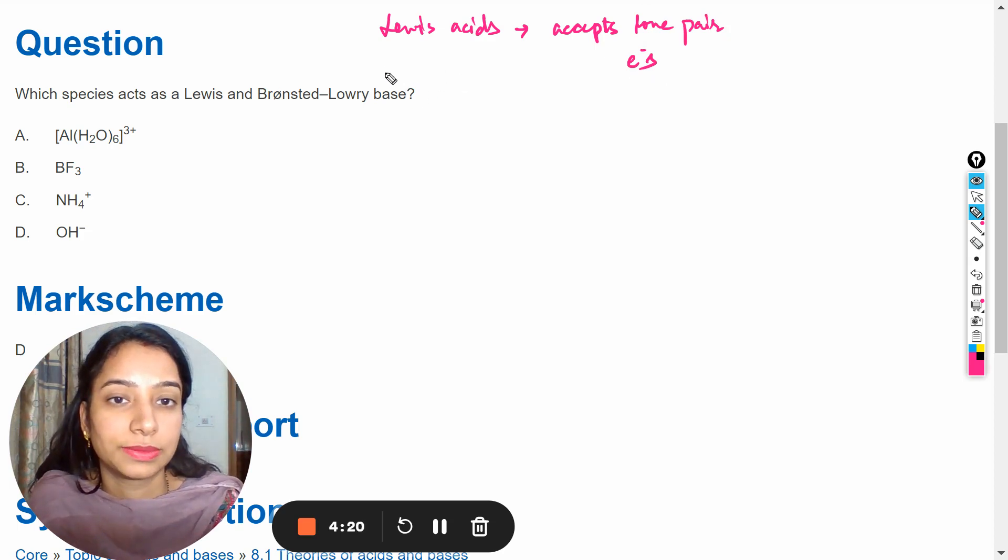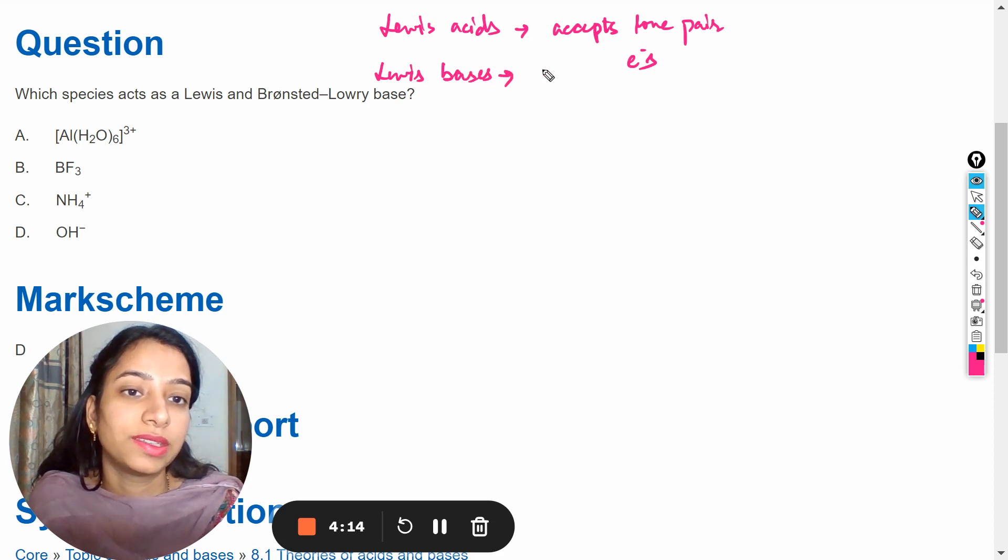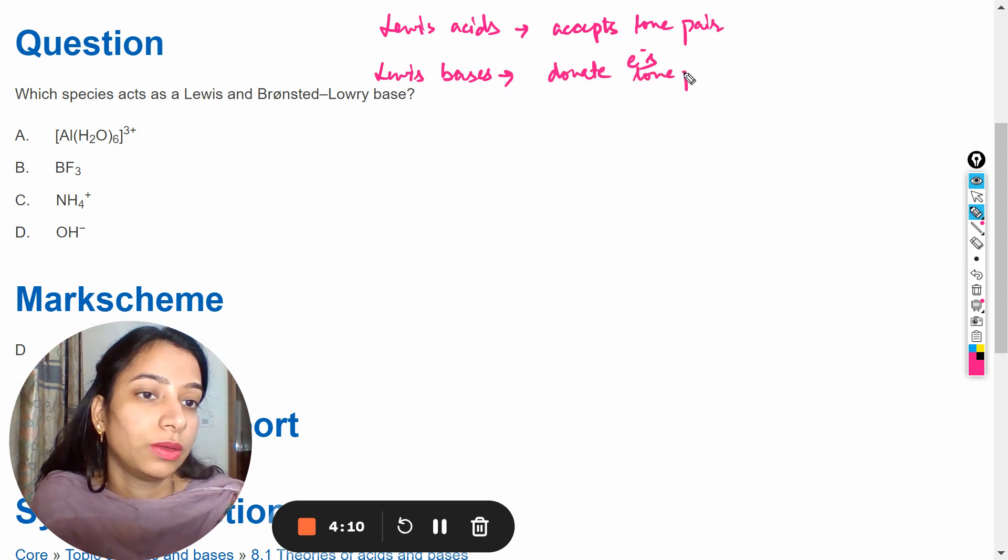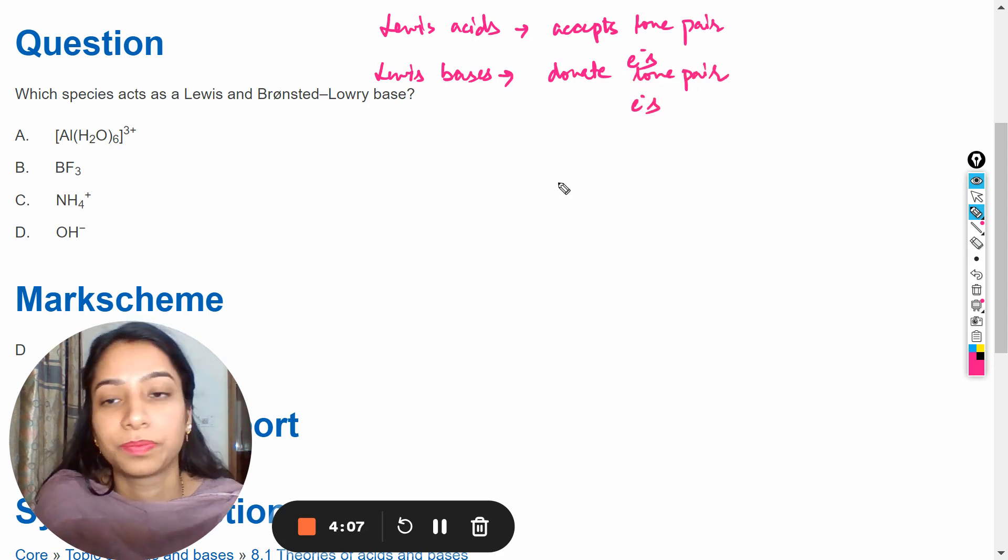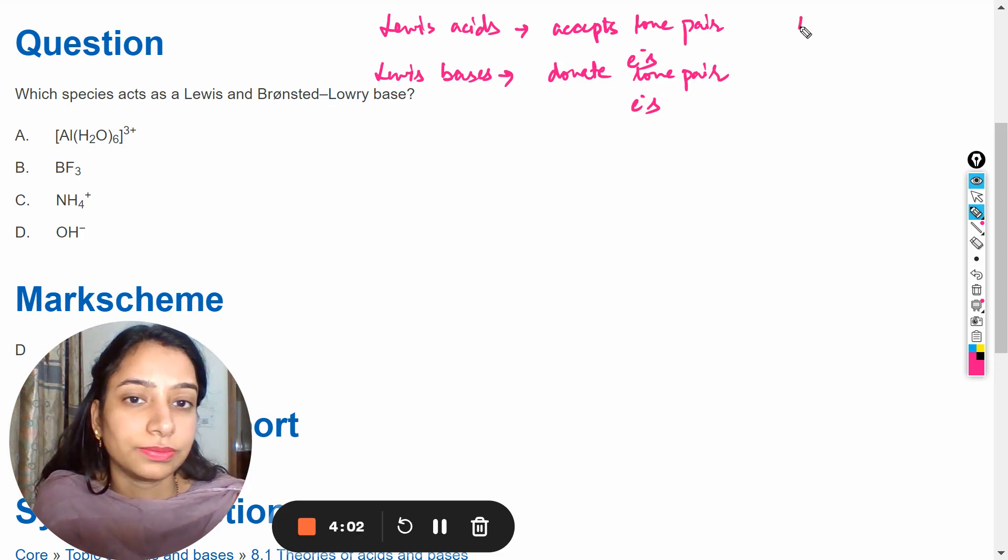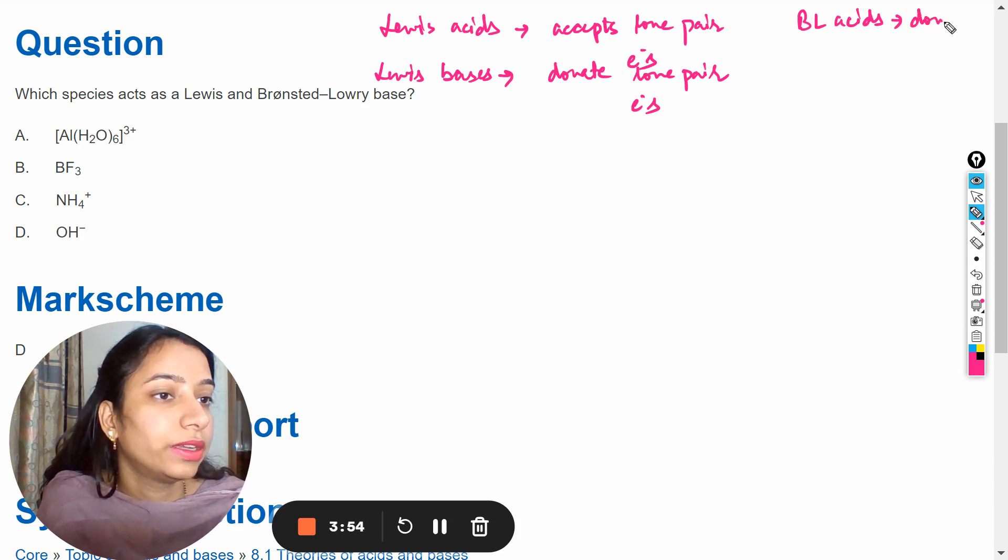Lewis bases are those which donate lone pair of electrons. And Bronsted-Lowry theory says that acids are those which donate proton and bases are those which accept the protons.